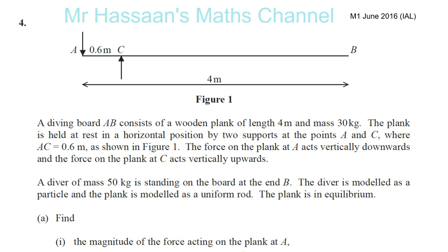Okay, question number 4 from M1, June 2016, IAL. We'll start with 4A. A diving board AB consists of a wooden plank of length 4 meters and mass 30 kilograms.